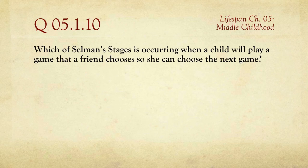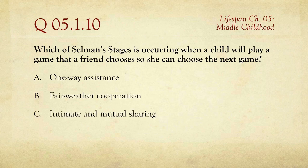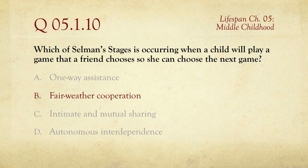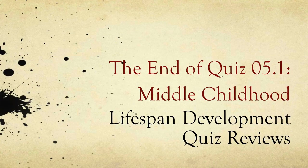The last question in this first quiz: which of Selman's stages is occurring when a child will play a game that a friend chooses so she can choose the next game? It's a very deliberate, strategic turn-taking. The choices are one-way assistance, fair-weather cooperation, intimate and mutual sharing, or autonomous interdependence. The answer is fair-weather cooperation — basically, I'll cooperate with you as long as I get what I want next time. Looking at the table, Stage 2 (ages 7 to 12) shows that friends are viewed as doing things for one another, but the focus still remains on self-interest. That is the end of Quiz 1 on Chapter 5, Middle Childhood, for the course Lifespan Development. Thanks for watching.